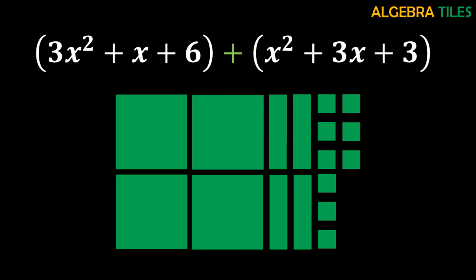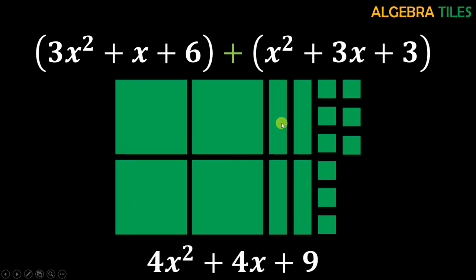I have rearranged all the pieces of both polynomials so that all the x squared tiles are together, all the x tiles are together, and all the ones tiles are together. By just visualizing this I do not need to calculate anything — I can simply read off the answer. I have 4 x squared tiles, 4 x tiles, and 9 ones tiles, so the answer is 4x squared plus 4x plus 9. Using algebra tiles you can just visualize and give the right answer for operations on polynomials.